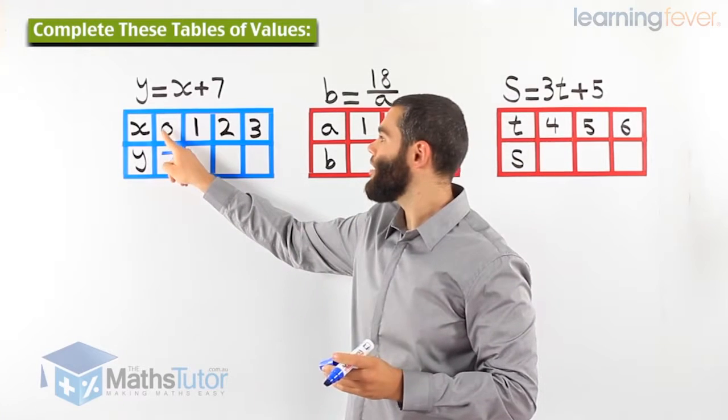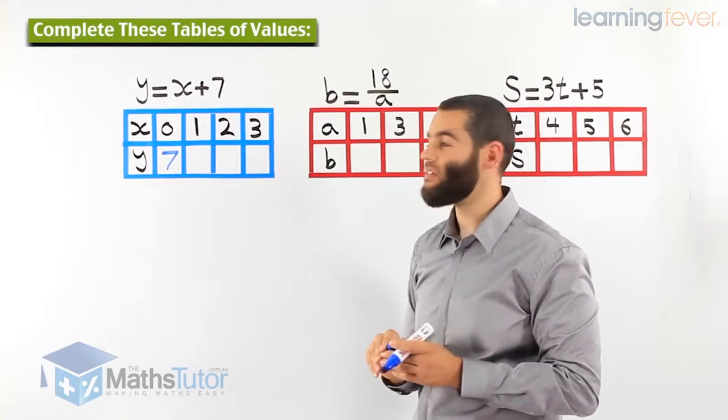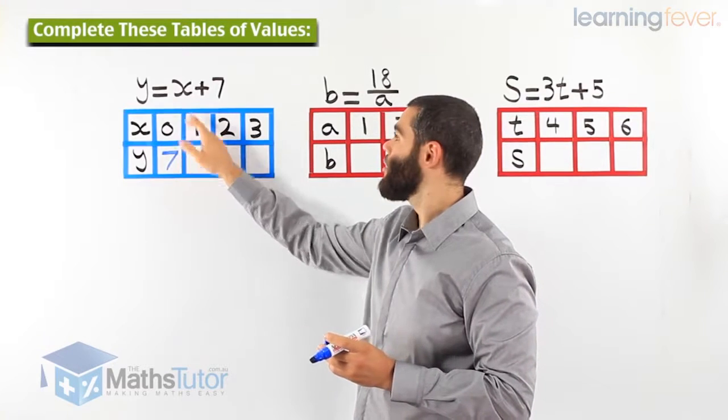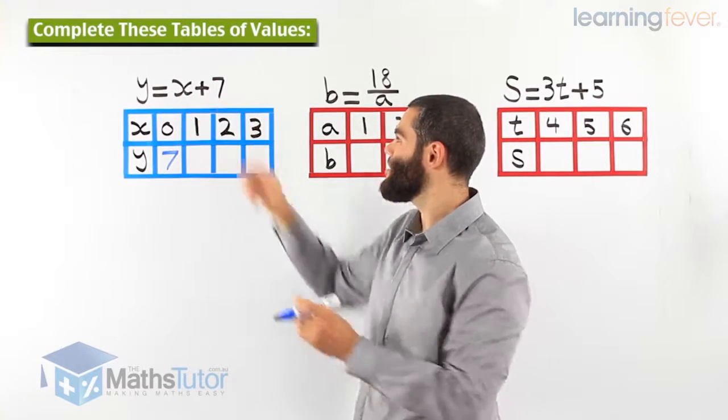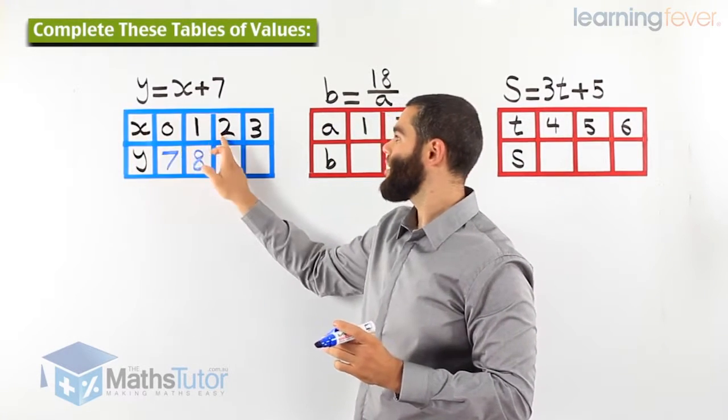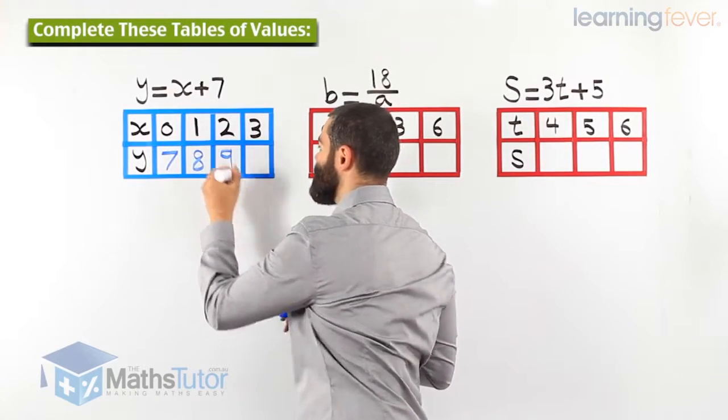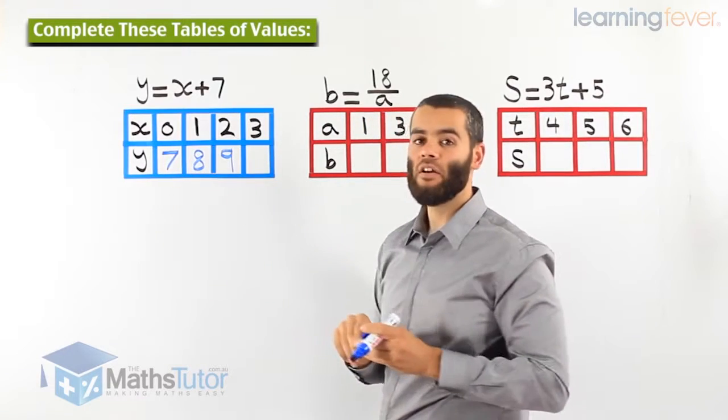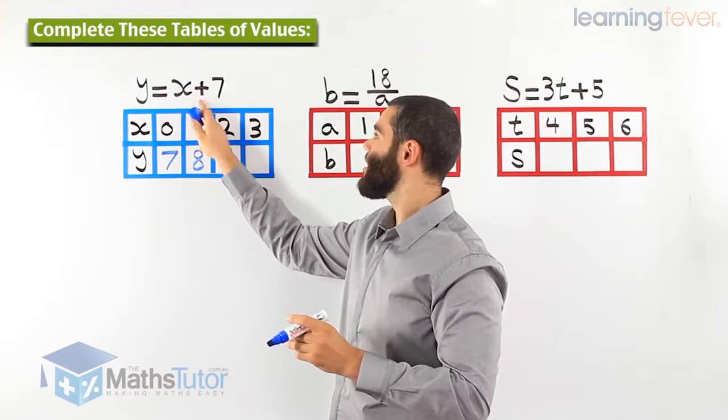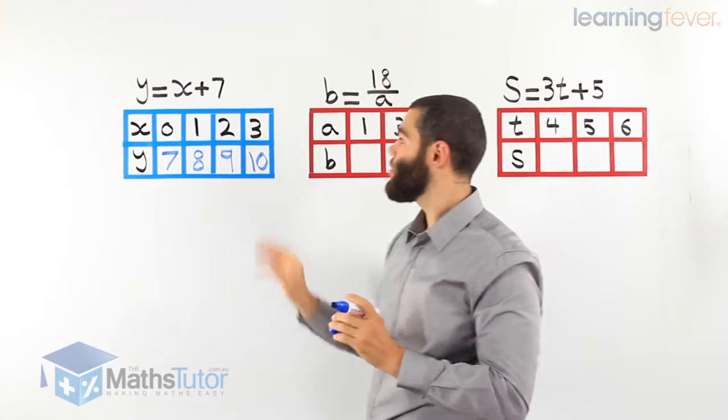So for the first one, when x equals 0, 0 plus 7, our answer is 7. The next number, x is replaced with 1. 1 plus 7, the answer is 8. Then x is replaced with 2. 2 plus 7 equals 9. As you can see, there is a pattern: 7, 8, 9. And the next one, x is replaced with 3. 3 plus 7, our answer is 10.